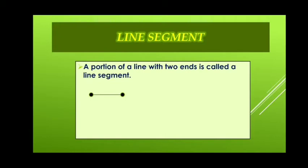Line segment. A portion of a line with two ends is called a line segment. Here, line AB with dots at the end represents line segment.